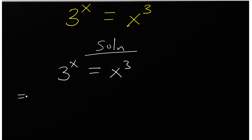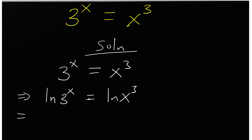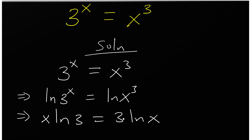To start, take the natural log on both sides. So we have ln of 3 to the power x equals ln of x to the power 3. Using the power rule, the exponents come down: x times ln(3) equals 3 times ln(x).